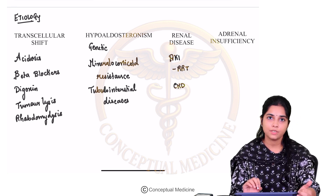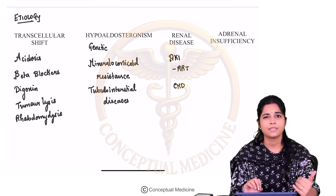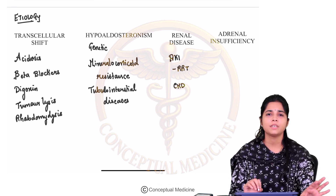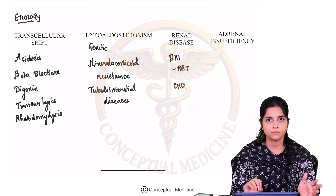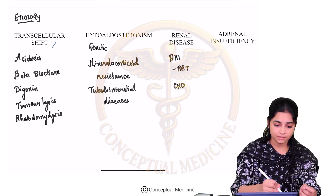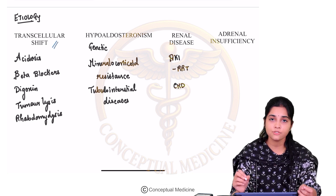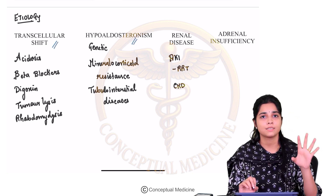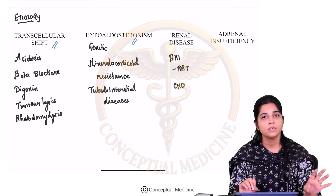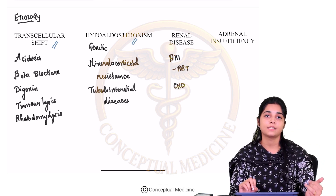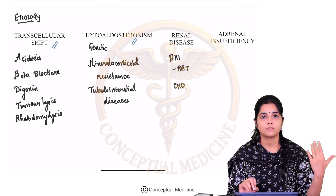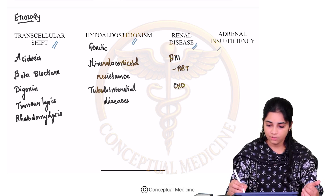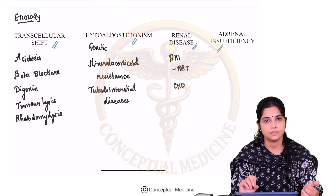Now let us understand the etiology of hyperkalemia. The etiology can be due to an excessive external amount of potassium, which is very rare because potassium gets excreted out. What you have to remember is transcellular shift, hypoaldosteronism — if you go back and understand hypokalemia, you will understand that hypoaldosteronism is associated with hyperkalemia — then renal disease or adrenal insufficiency.